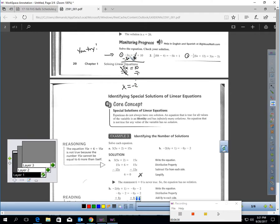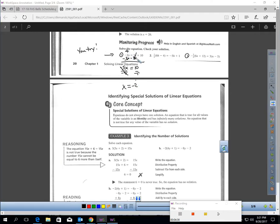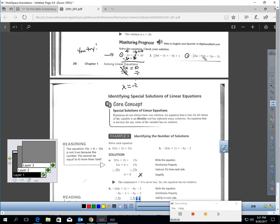And when I check it, it's working. I get 4 here. And over here, I get negative 6 plus 10. And that equals 4.